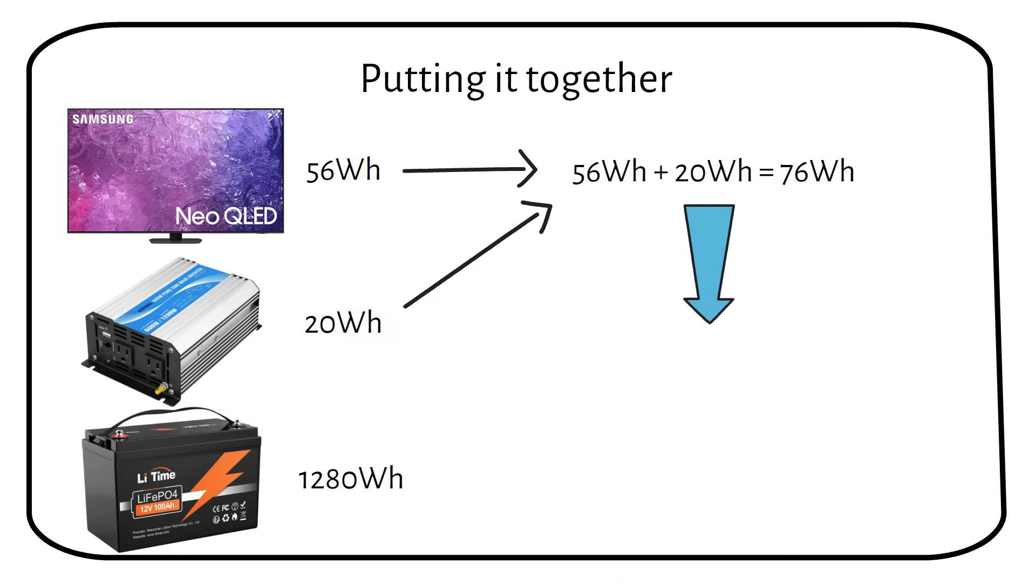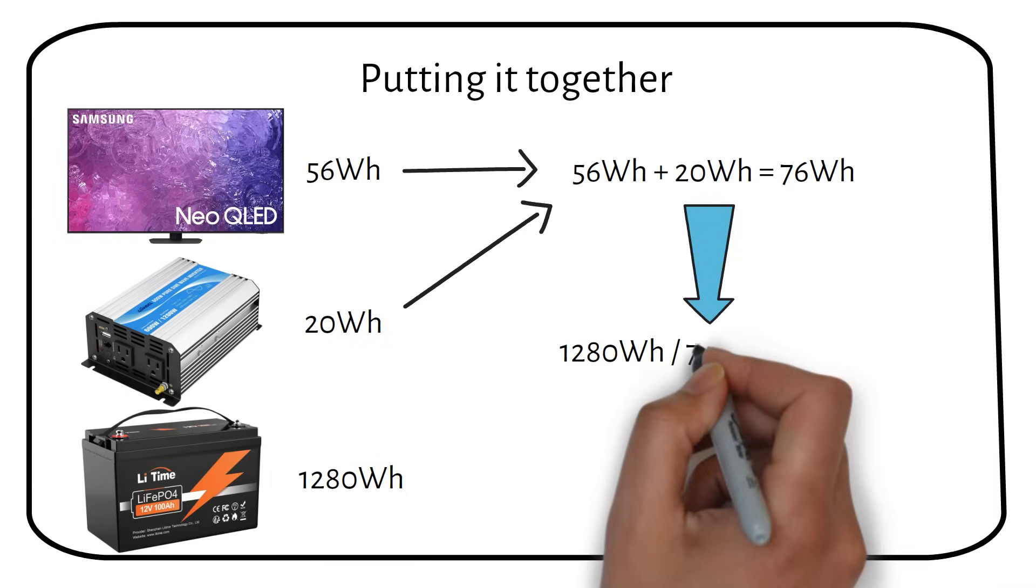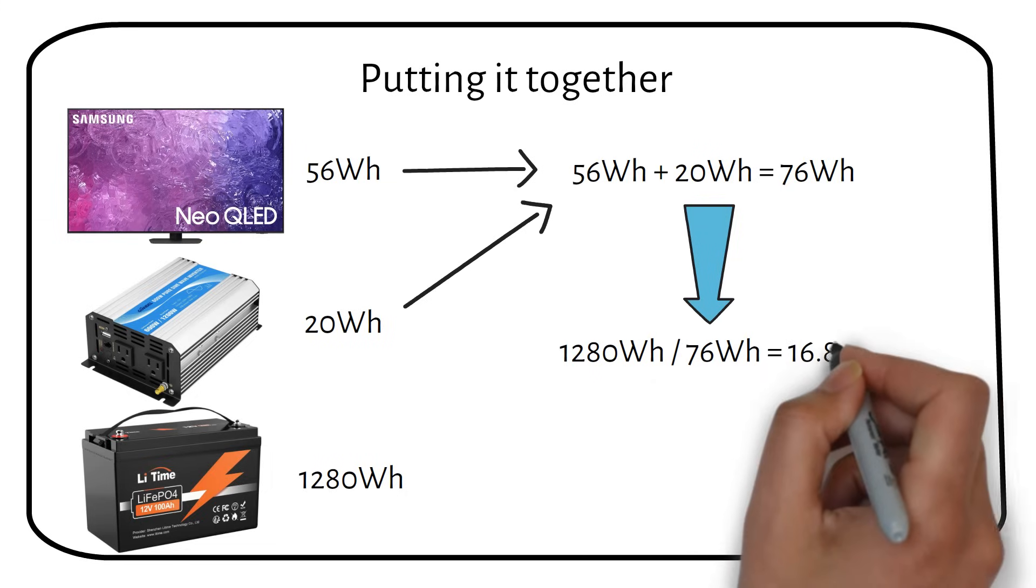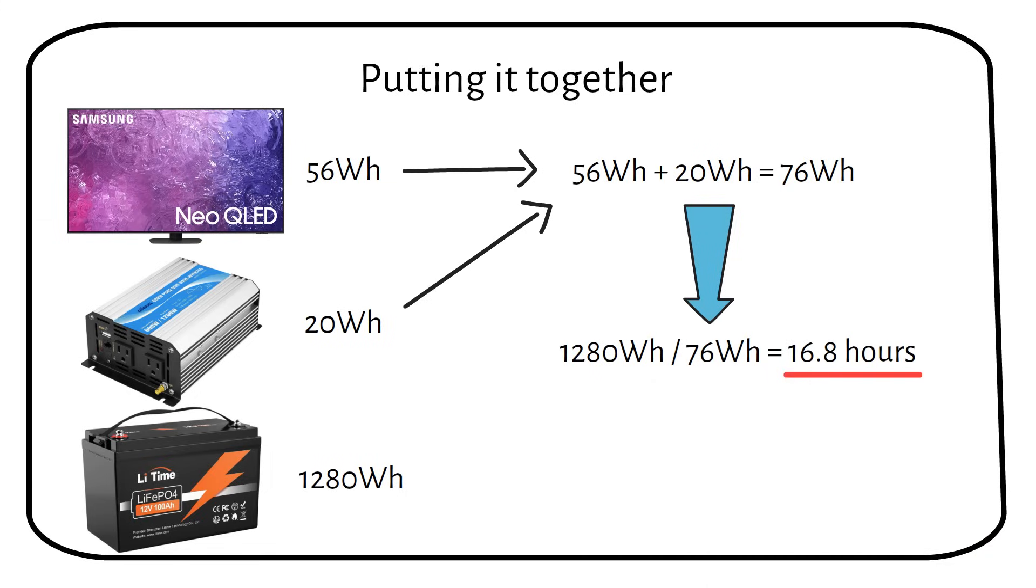And you already guessed what we have to do next. We divide the total battery capacity by the consumption per hour. 1280 watt hours divided by 76 watt hours equals 16.8 hours of total run time before the battery shuts down.